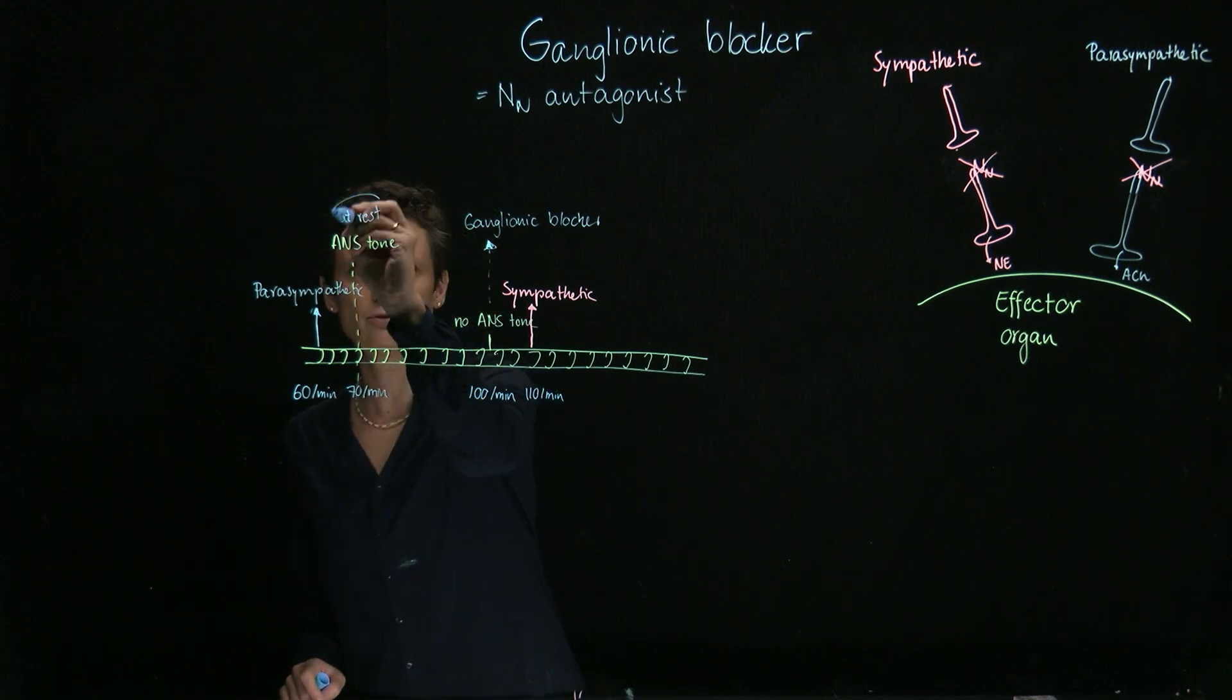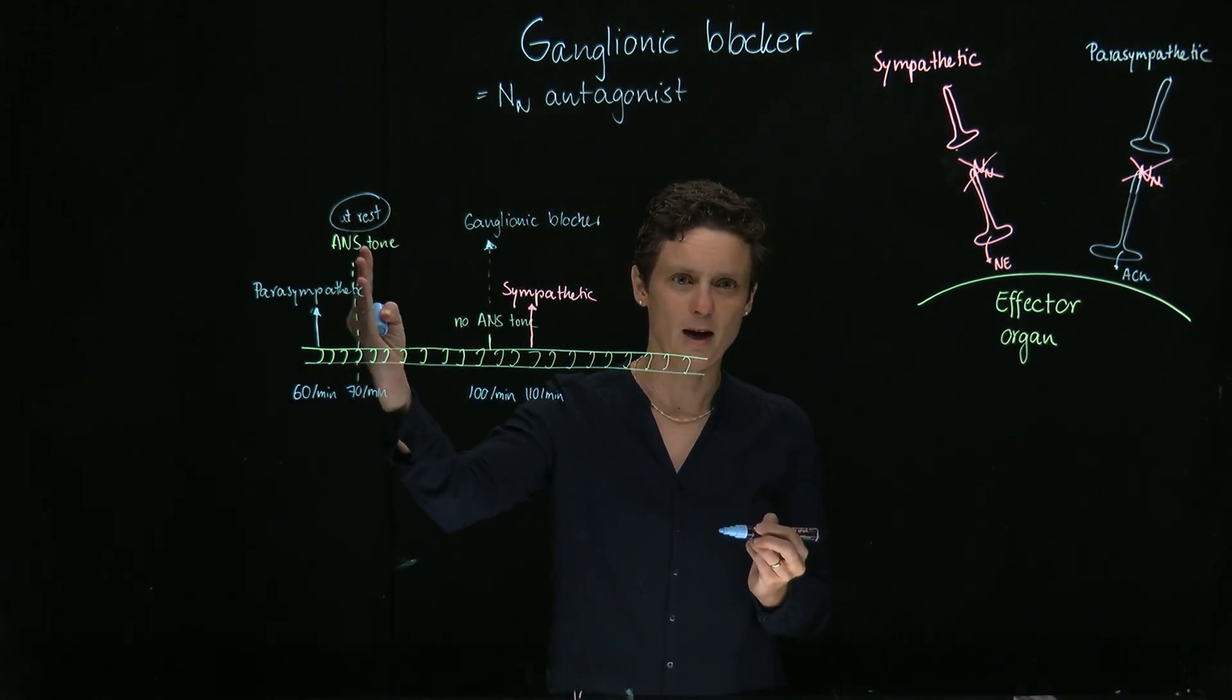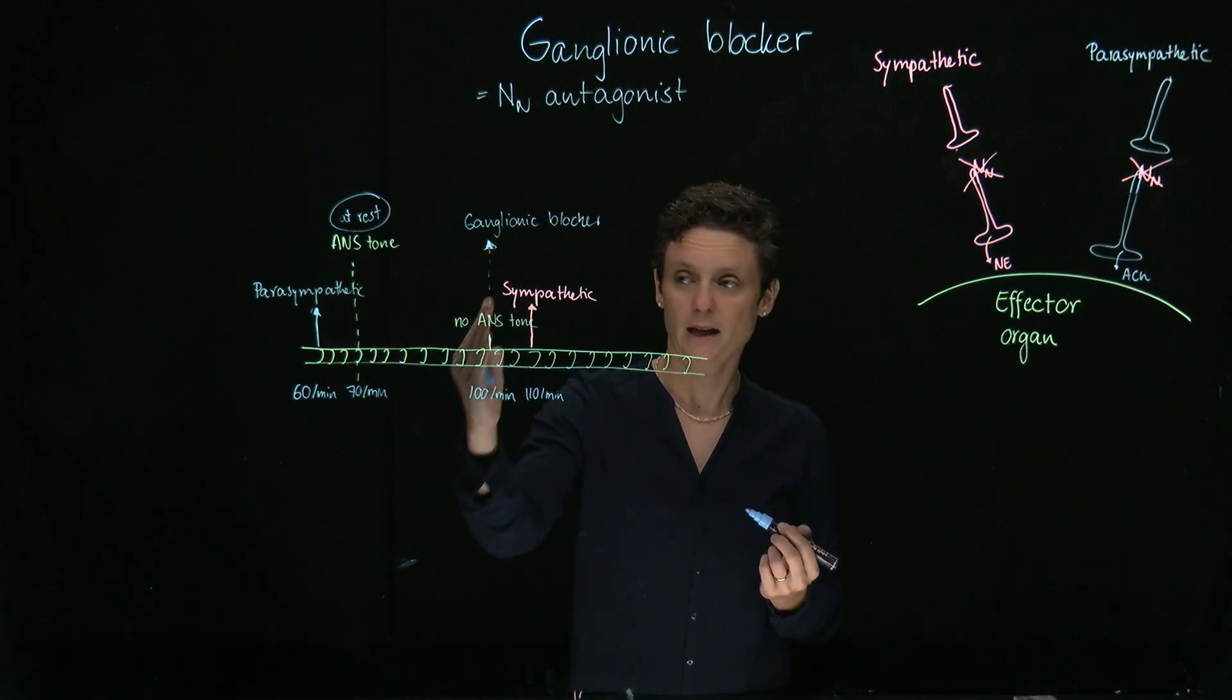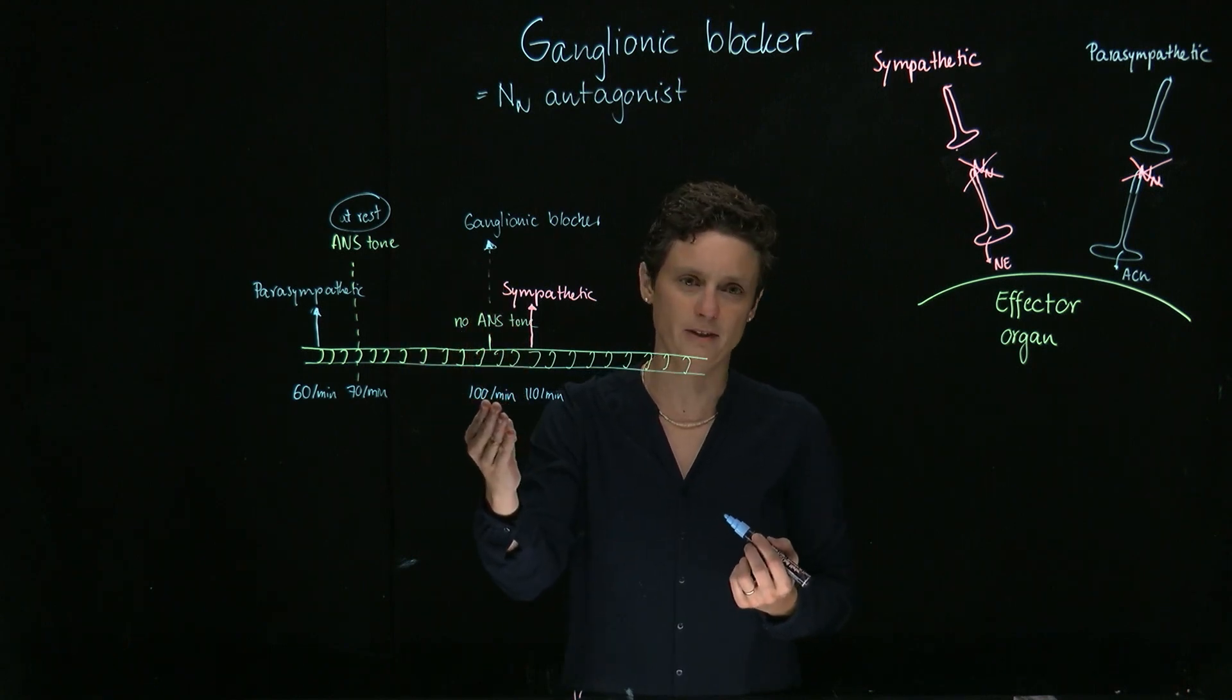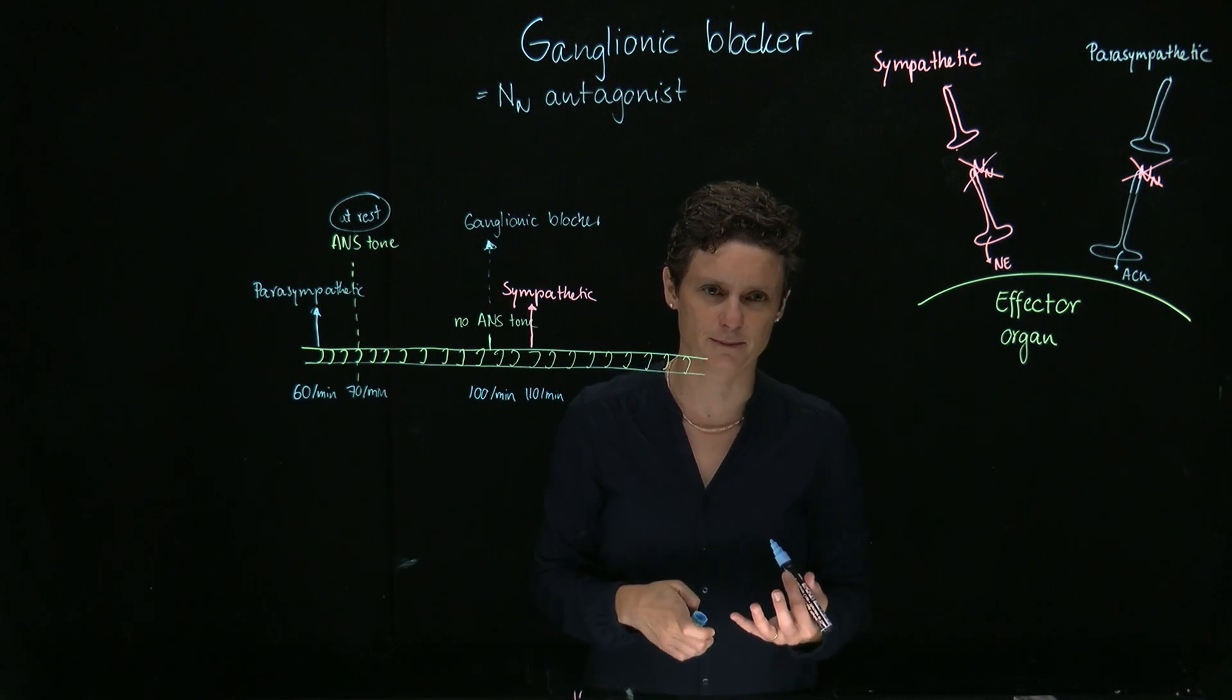Now that's at rest, our resting heart rate. So if you use a ganglionic blocker, where is our heart rate going to go? Well, it's going to go up. Because we're going to go more close to the no ANS tone, because we block everything. So we're going to go to the opposite of the parasympathetic nervous system effect.